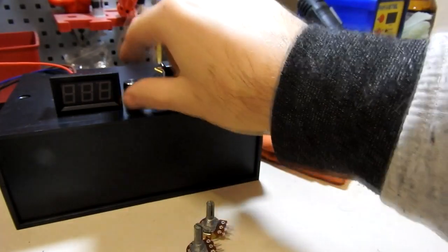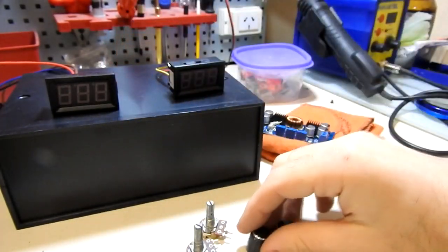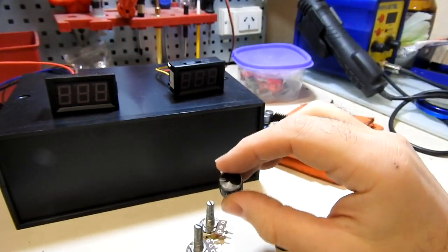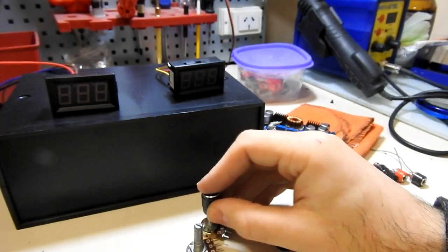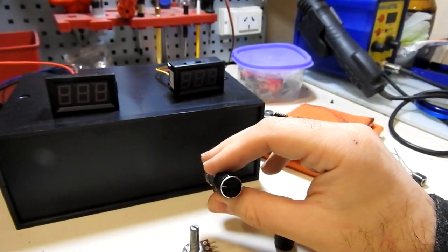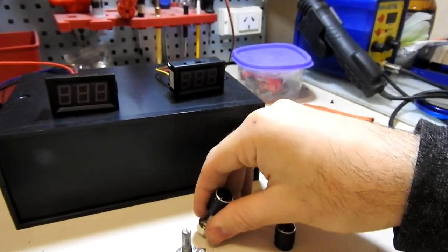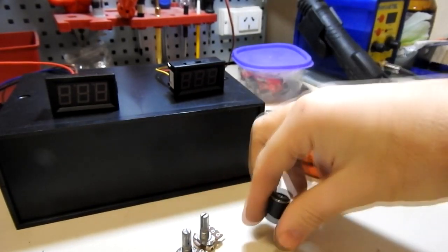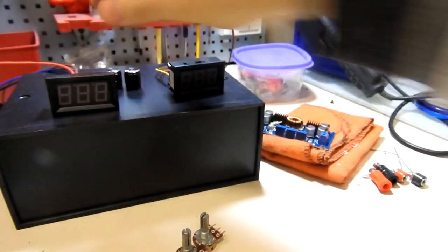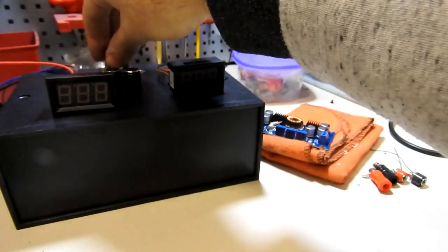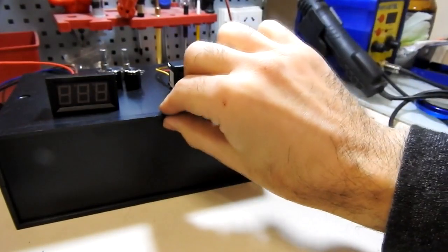Para aquellos que tienen la oportunidad de comprar algún potenciómetro multivuelta para regular mejor, le va a venir al pelo. Lo que vamos a agregar también, para mejorar un poco el aspecto visual, son estos manijitas que van acá en el potenciómetro. Después esto quedaría lindo, agradable a la vista. Esa es otra cosa que le vamos a agregar.